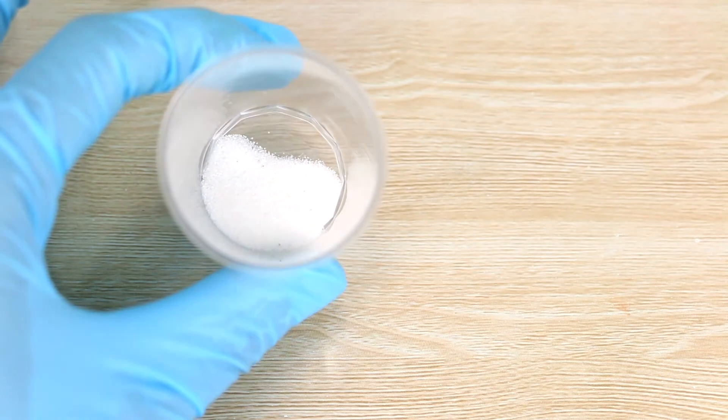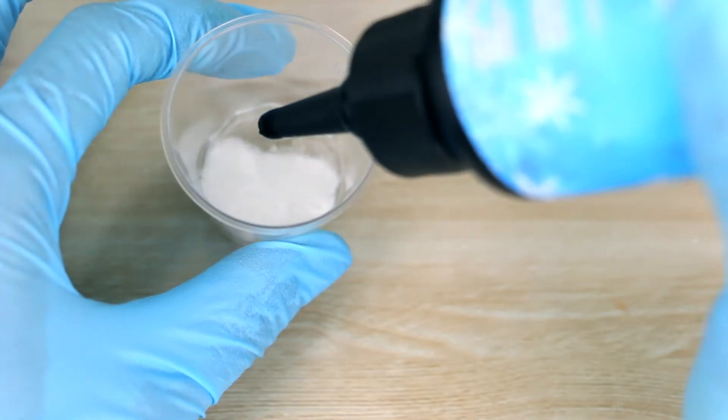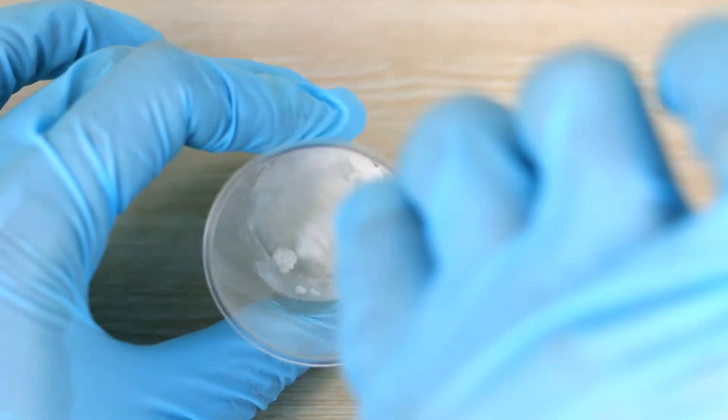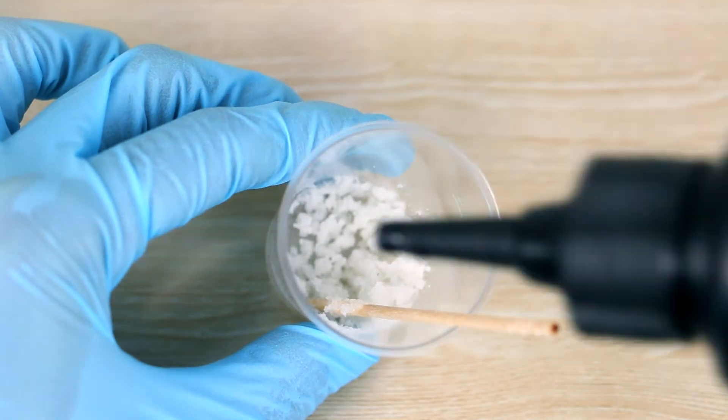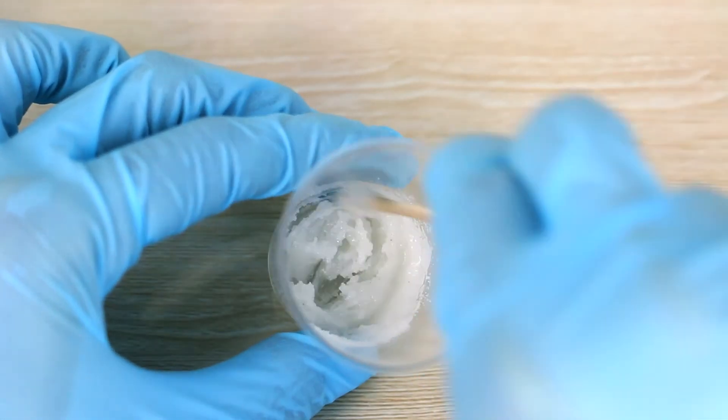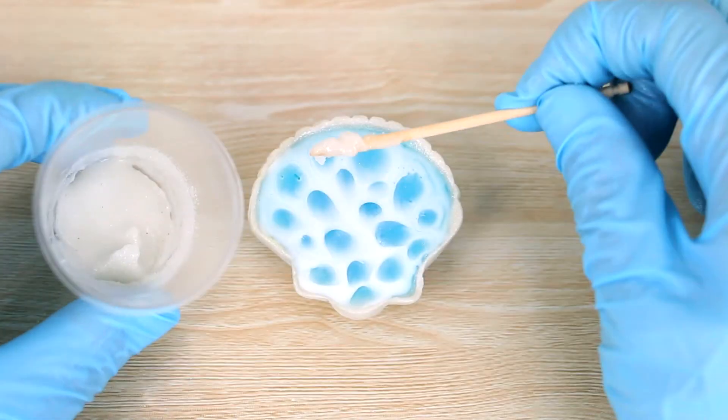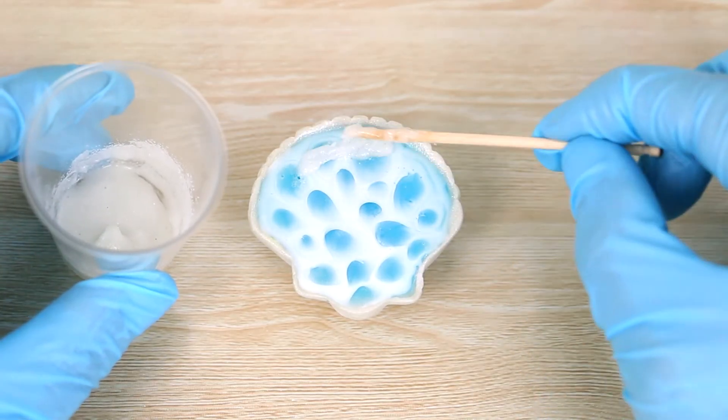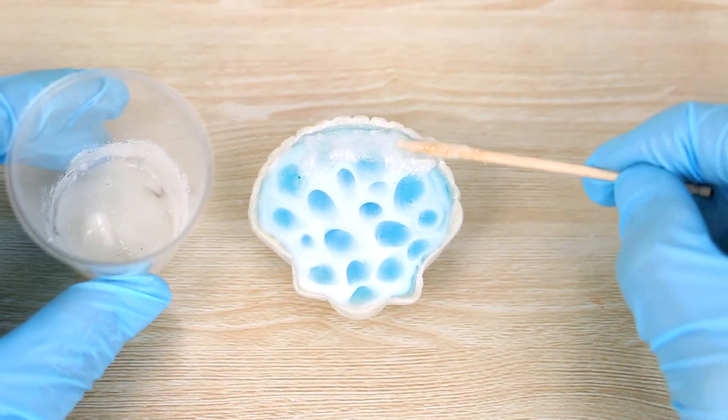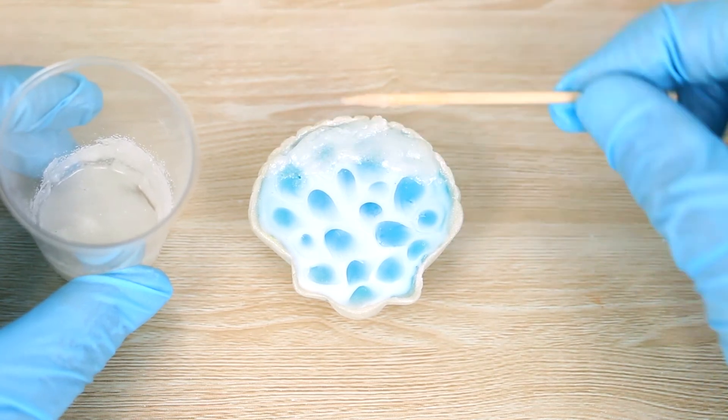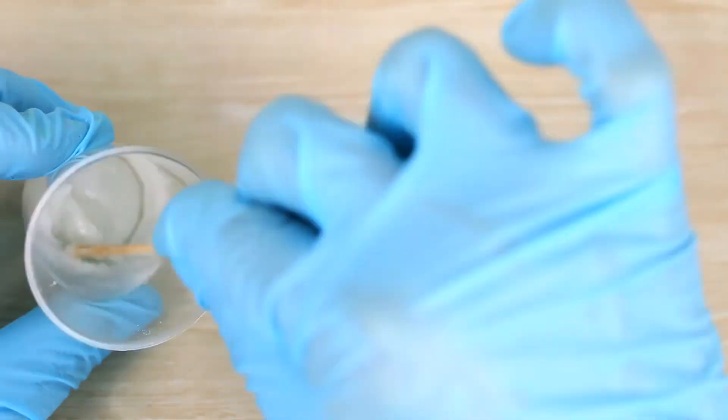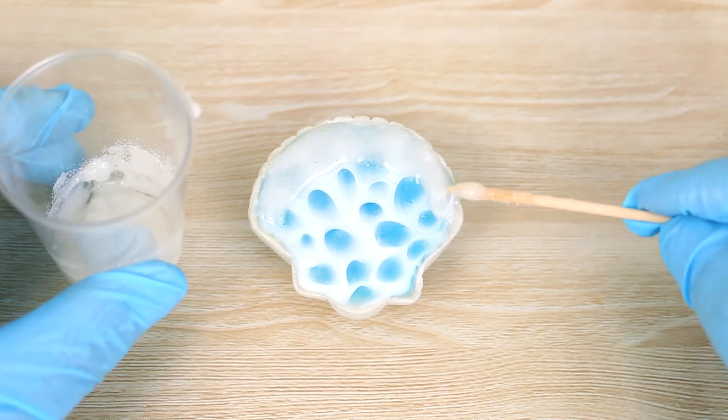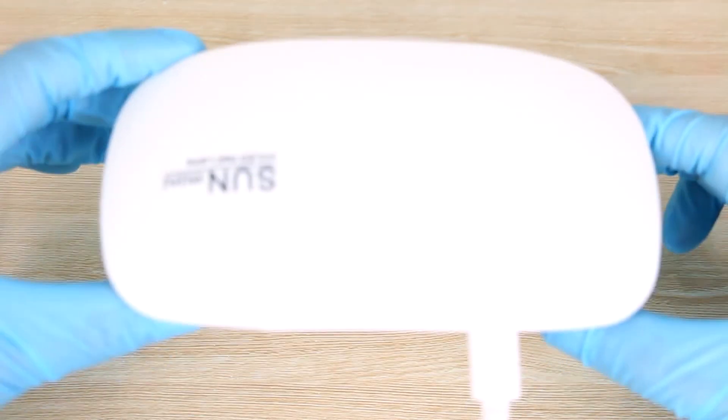So next I have some white craft sand in this little cup, and I'm going to add some UV resin and mix it around so that it looks like wet sand. And then I'm going to spread it around the top edge of the seashell so that it looks like sea foam, and then cure that with the light.